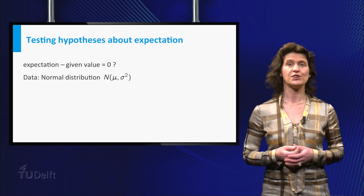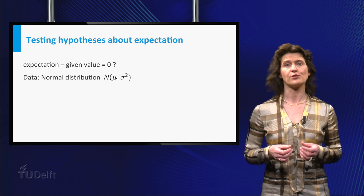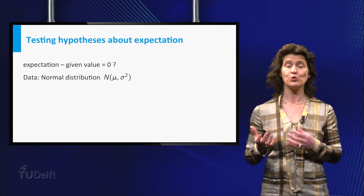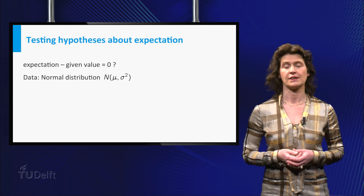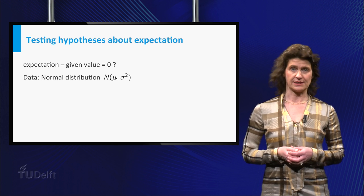In this video, we assume the data are from a normal distribution with both parameters mu and sigma squared unknown. In class we will generalize this.